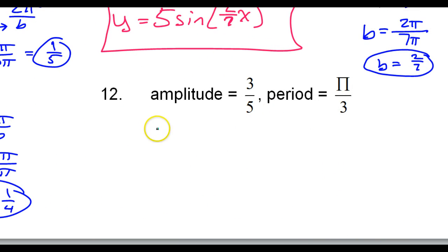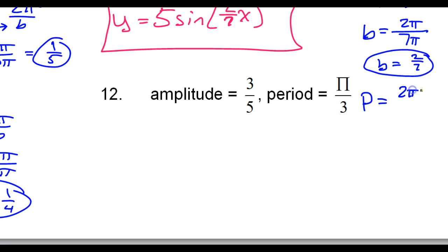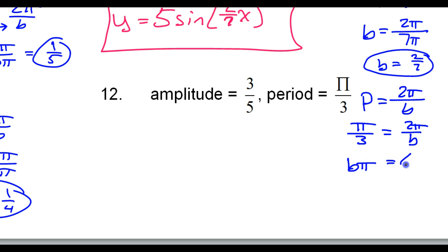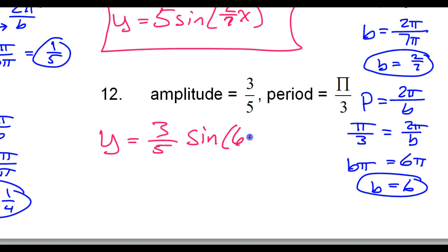Number 12. The period is 2 pi over b. That means pi over 3 is equal to 2 pi over b. When I have a fraction here, it's easier to cross multiply. So pi times b equals 6 pi — diagonal times diagonal. Dividing both sides by pi gives b equals 6. So y equals the amplitude times sine of 6x.